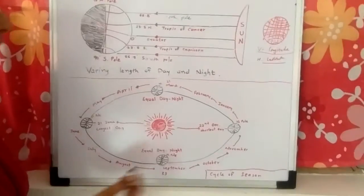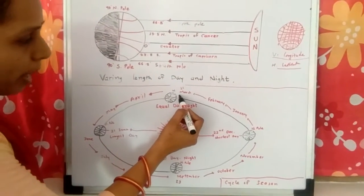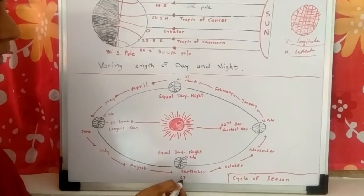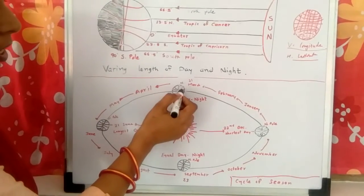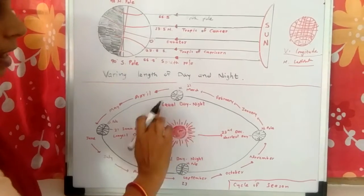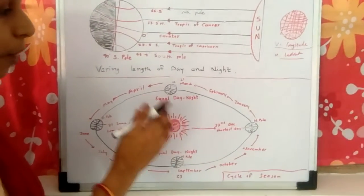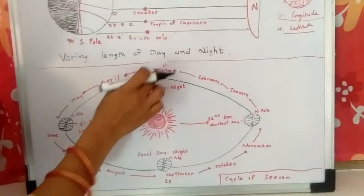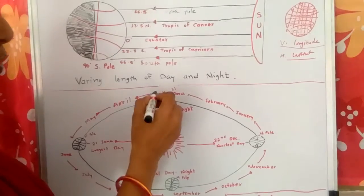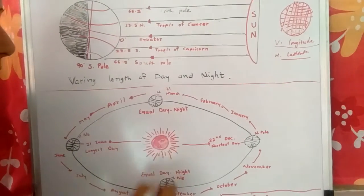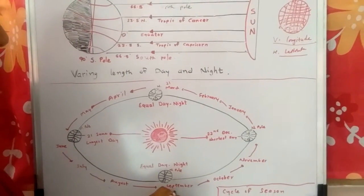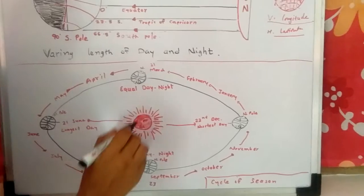If we talk about March and September — the sun is positioned such that on 21st March and 23rd September, these two days have equal day and night: 12 hours of day and 12 hours of night. This is because the sun's rays are directly on the equator on these dates, making day and night equal on 21st March and 23rd September.